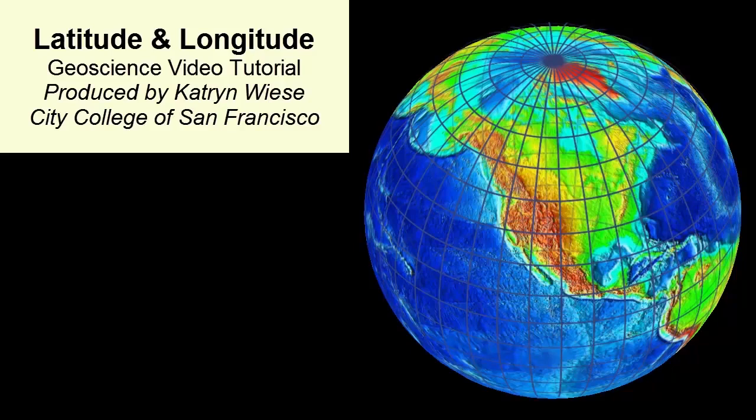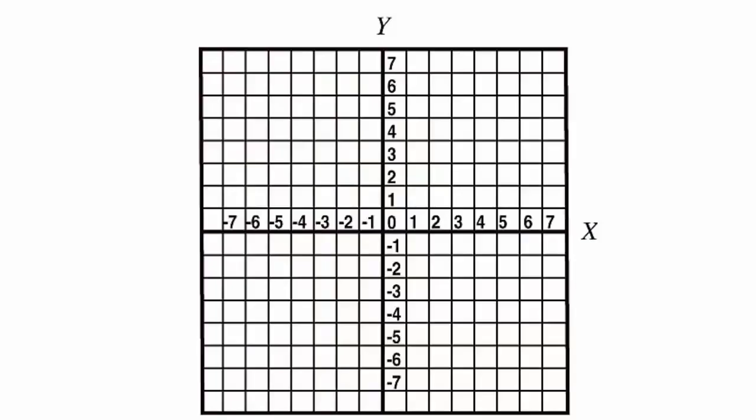You can use a spherical coordinate system known as latitude and longitude. Just like a planar coordinate system, we need an origin or zero reference and we measure away from that origin in two directions.